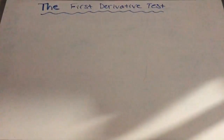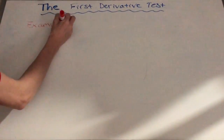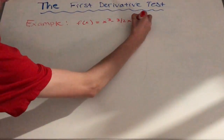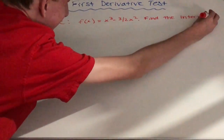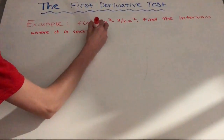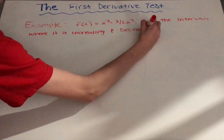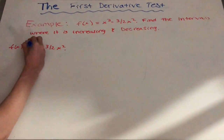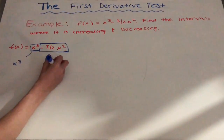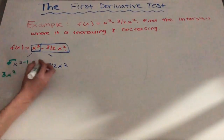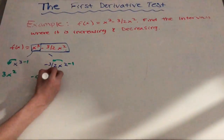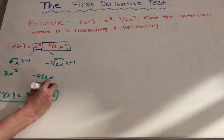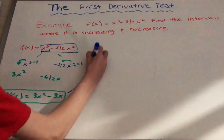We're going to look at an example to illustrate this process. The example problem is f(x) = x³ - (3/2)x². With this function, we're going to try to find the intervals where it is increasing and decreasing. The first step is to take the derivative. Separating it into x³ and -3/2 x², x³ turns into 3x² and -3/2 x² turns into -6/2 x, giving us f'(x) = 3x² - 3x.